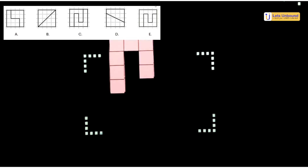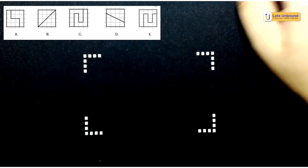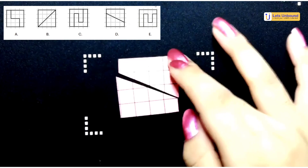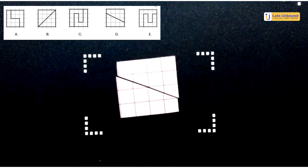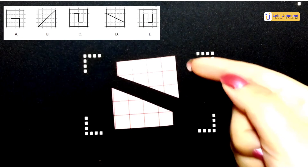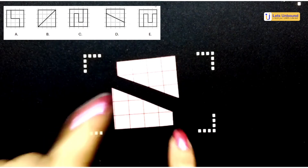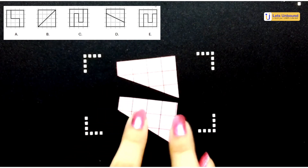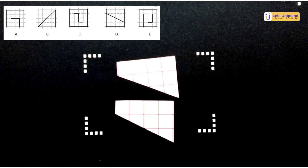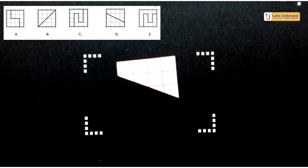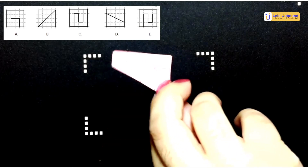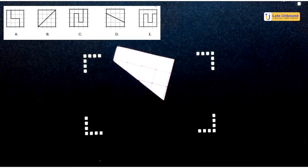Let's check option D. Option D is made up of trapezoids — they are again identical shapes. Let's apply the same test: both shapes are the same. If I place it just above the other one, it overlaps — so there are two identical trapezoids in option D.